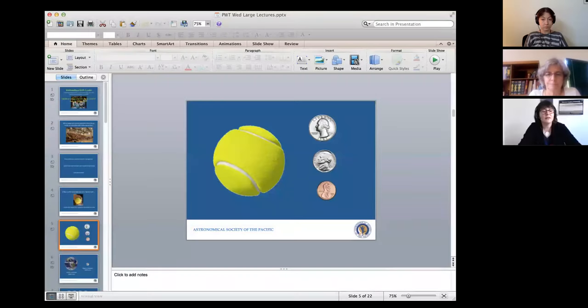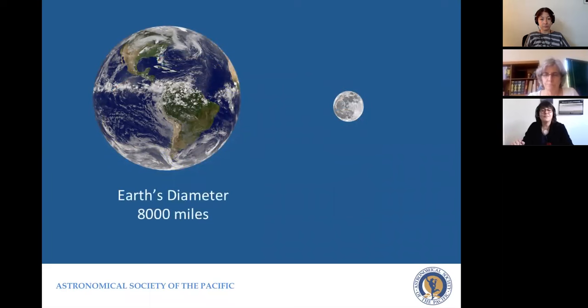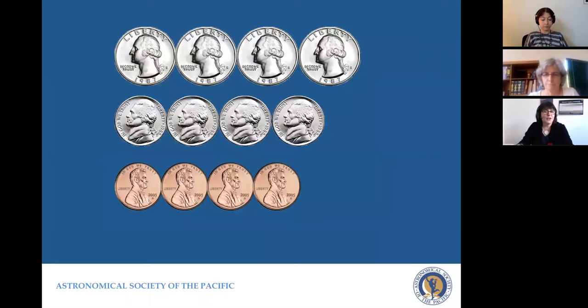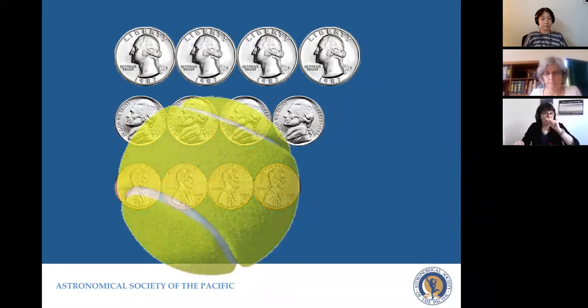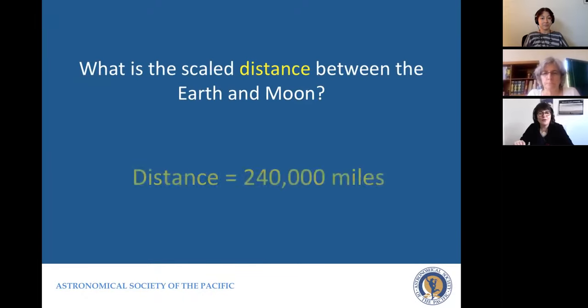Going back to the PowerPoint: the answer was in fact the penny. Earth's diameter is 8,000 miles, Moon's is 2,000 — four-to-one ratio. Here are our choices, and when you lay them out end to end you really do see the difference. Here's my tennis ball superimposed so you can see the closest match really is the penny. And by the way, this PowerPoint is to scale. The distance is 240,000 miles divided by 8,000, which gives me 30 Earths laid end to end.